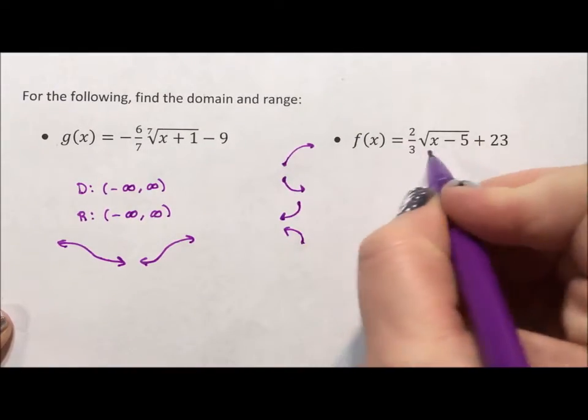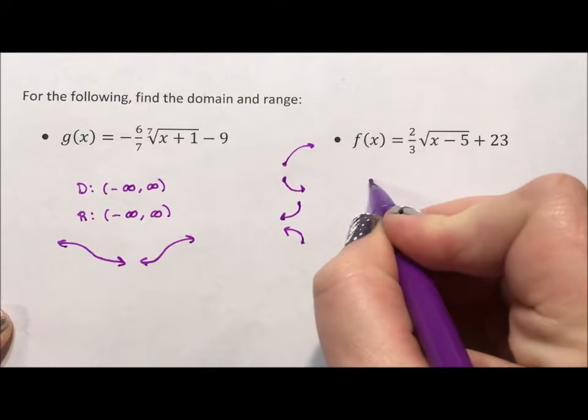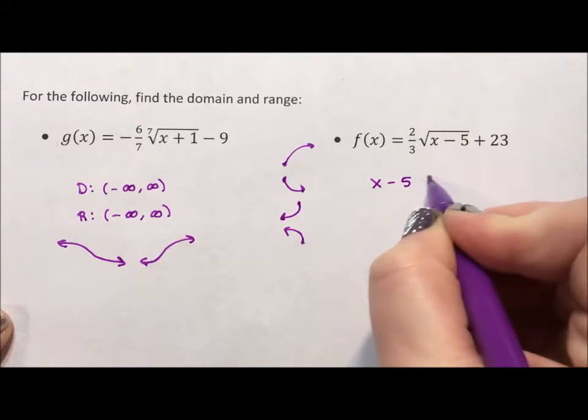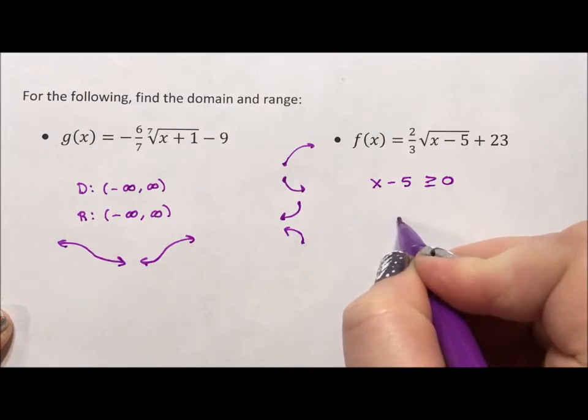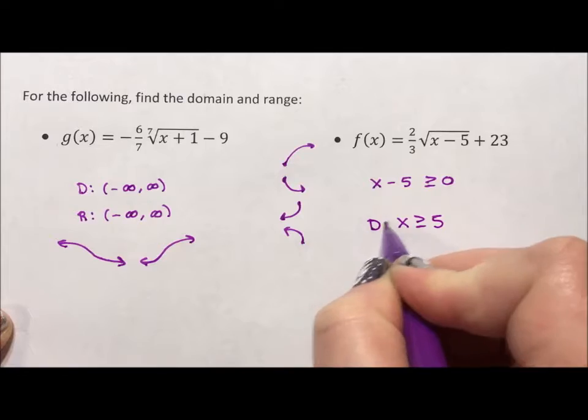To figure out the domain, you need to take whatever is under the radical, this x minus 5, and say that it is greater than or equal to zero. If I add 5 over, I get that x is greater than or equal to 5, and that's our domain.